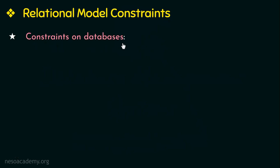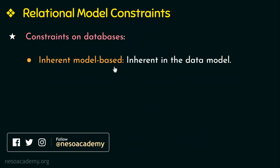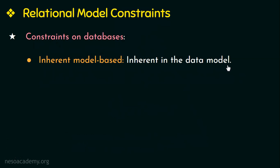Constraints on databases can be divided into three categories. The first one is inherent model-based constraints, otherwise called implicit constraints. As the name itself suggests, these constraints are inherent or already existing in the data model. For example, duplicate tuples or rows are not allowed in a relation, so this constraint already exists and we need not mention it again explicitly.